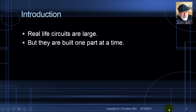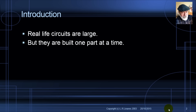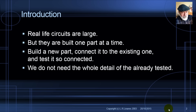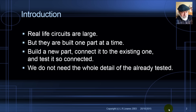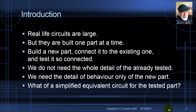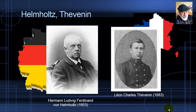Real-life circuits are large and huge. But the good news is they are built one part at a time: first the little part is tested, then the second part is connected to the existing and already tested one, and the whole thing is tested again, and so on until the whole circuit is finished. We do not need, at every stage, the whole detail of the circuit simulation. What we need is the detailed behaviour of only the new part connected to the already-tested part of the circuit represented by a simple equivalent circuit.